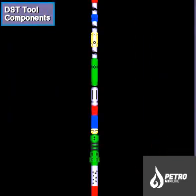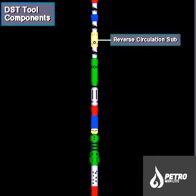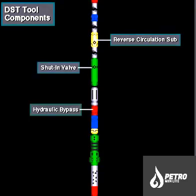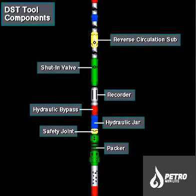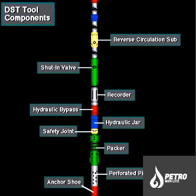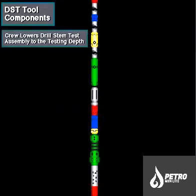Here's a drill stem test tool, made up on the bottom of the drill stem. From top, it has a reverse circulation sub, shut-in valve, hydraulic bypass, recorder, hydraulic jar, safety joint, packer, perforated pipe, and an anchor shoe. The crew lowers this assembly to the depth the well owner wants to test — in this case, the bottom of the hole.